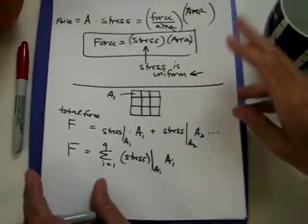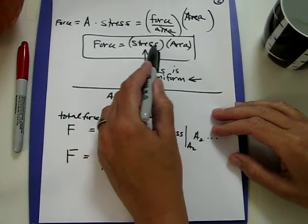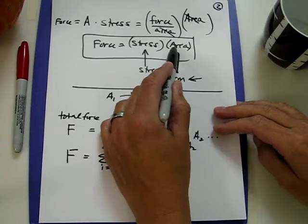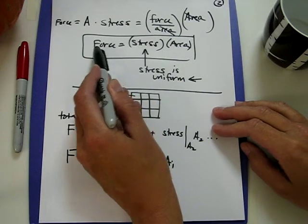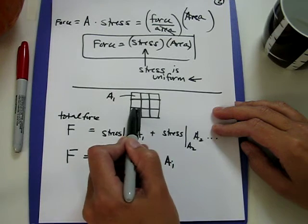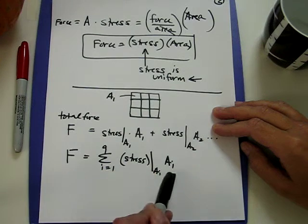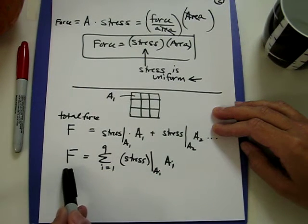Just to review, to calculate the force on a surface, we want to calculate the stress on that surface, multiply by the area, and we get the force. When the stress varies with position on a surface, we need to calculate the stress in every little piece of the surface and add them up to get the total force.